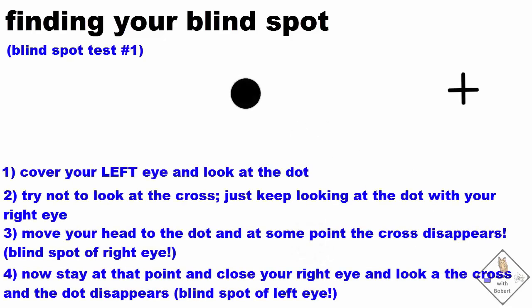First, cover your left eye and look at the dot. Try not to look at the cross. Just keep looking at the dot with your right eye. Move your head to the dot and at some point the cross disappears. Now stay at that point and close your right eye and look at the cross and the dot disappears.